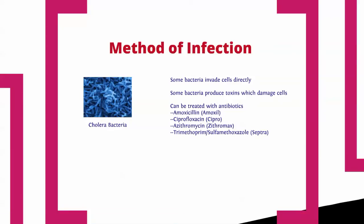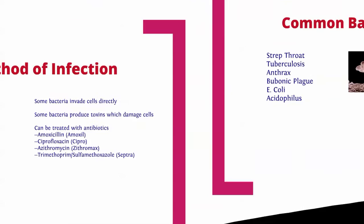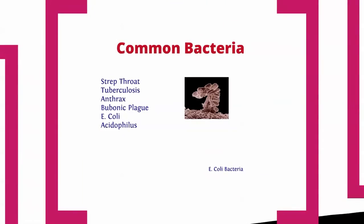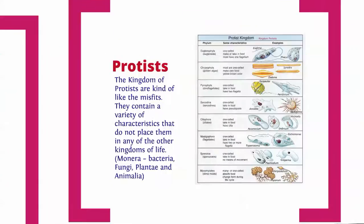The method of infection for bacteria: they invade your cells directly. Some produce toxins which damage your cells, but they can all be treated with antibiotics — anti meaning against, bio meaning life. Common antibiotics include amoxicillin or ciprofloxacin. Common bacterial diseases include strep throat, TB, anthrax, bubonic plague, and E. coli.